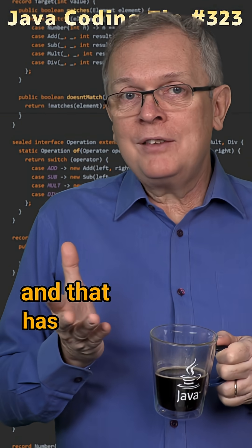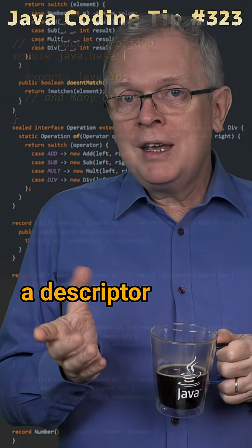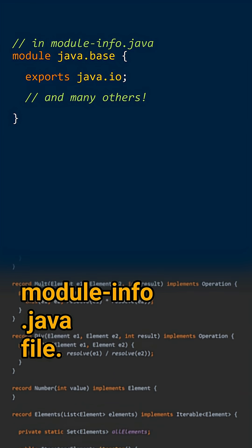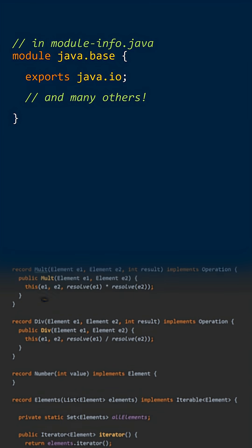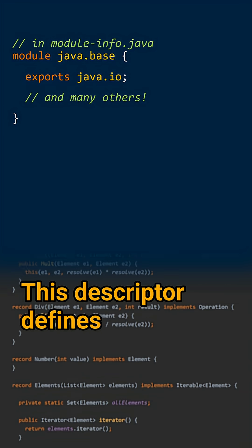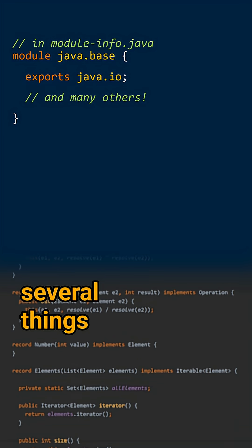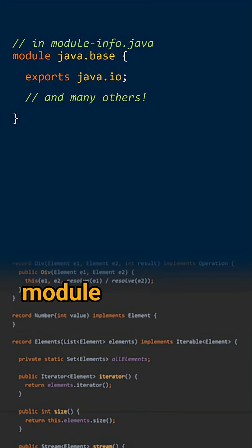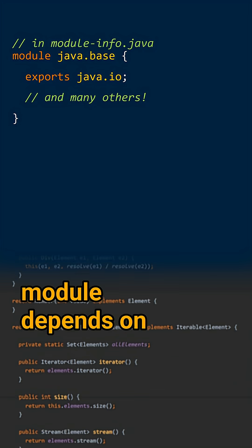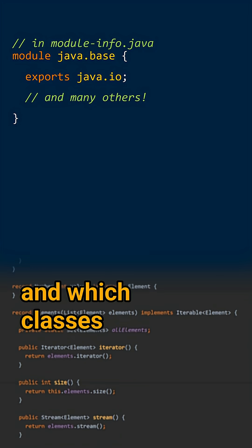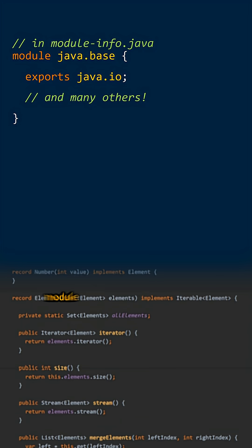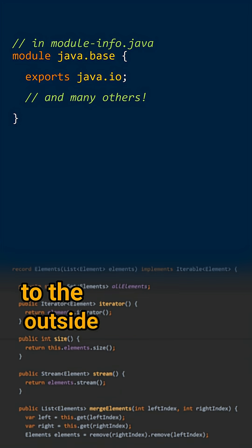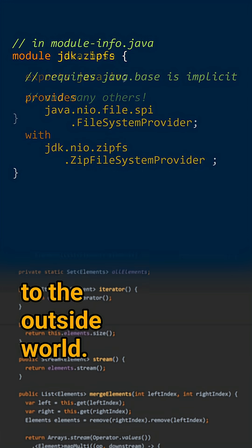and that has a descriptor in the form of a module-info.java file. This descriptor defines several things, like the modules this module depends on, and which classes this module exposes to the outside world.